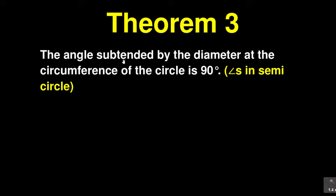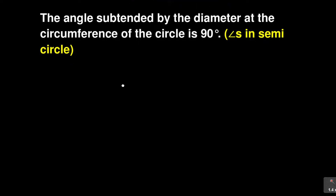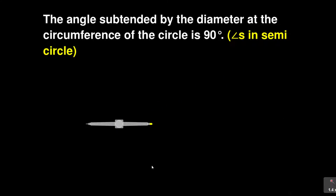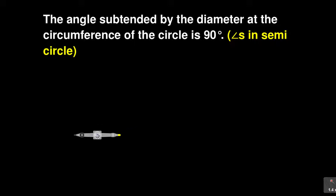It says the angle subtended by the diameter — and by the way, how do you subtend an angle as a diameter? How do you subtend an angle as a diameter? So if I can bring in my circle, just as we have been drawing. So let me bring in my circle here — so if I have, as they say, a diameter here.